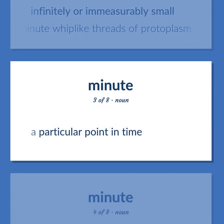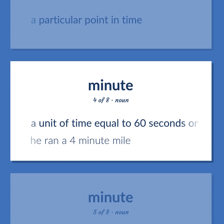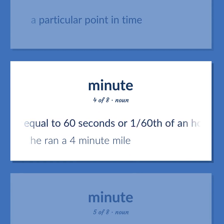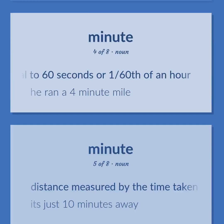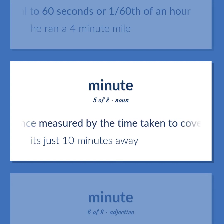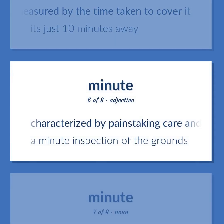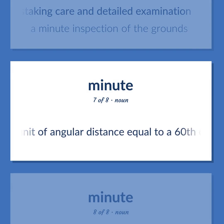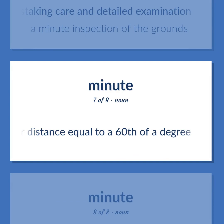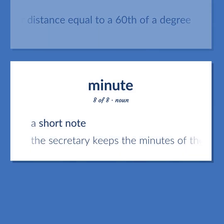A particular point in time. A unit of time equal to 60 seconds or 1/60th of an hour — "he ran a 4-minute mile." Distance measured by the time taken to cover it — "it's just 10 minutes away." Characterized by painstaking care and detailed examination — "a minute inspection of the grounds." A unit of angular distance equal to 1/60th of a degree. A short note — "the secretary keeps the minutes of the meeting."